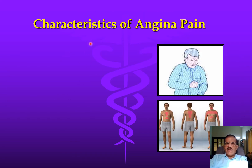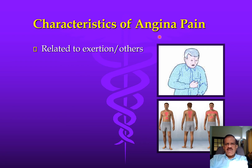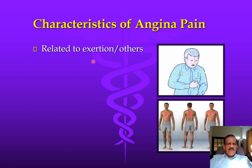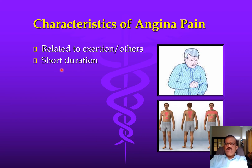Now let me describe the characteristics of angina pain. It is related to exertion and emotions — it comes with exertion and goes away the moment you stop. We are talking about chronic stable angina, which has a predictable pattern; once that pattern changes we call it unstable. The pain is of short duration — typically a few seconds to a few minutes — never lasting hours, and never just a fleeting prick.